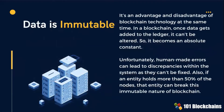In a blockchain, once data gets added to the ledger, it cannot be altered. Data becomes an absolute constant. Human-made errors can lead to discrepancies within the system, as they cannot be fixed. This is especially true for smart contracts.